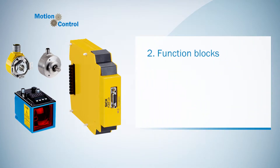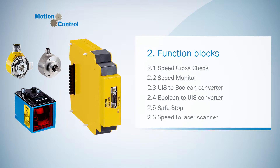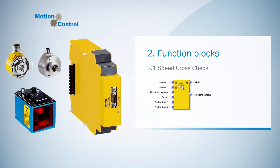The chapter on function blocks in the MOC logic is divided according to the different function blocks in 6 parts: SpeedCrossCheck, SpeedMonitor, UI8 to Boolean Converter, Boolean to UI8 Converter, SafeStop, and Speed to LaserScanner. The videos build on each other, so you can see how to combine the function blocks to get a typical MOC logic in the end. Now let's start with the first tutorial about the function block SpeedCrossCheck.